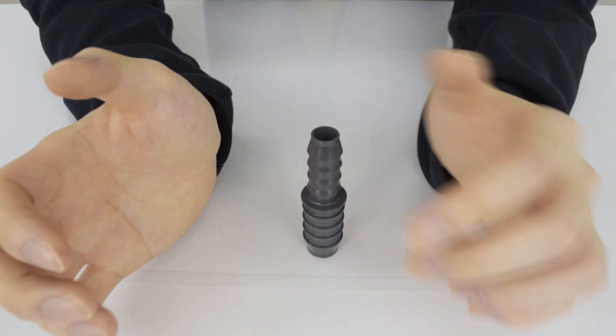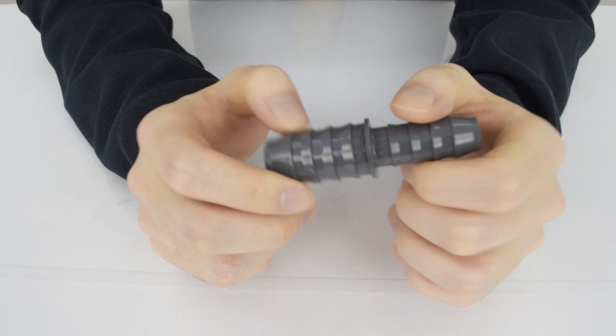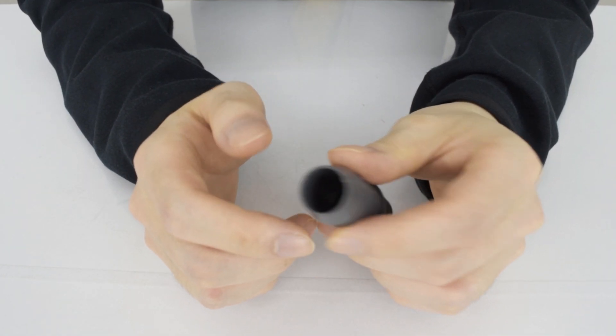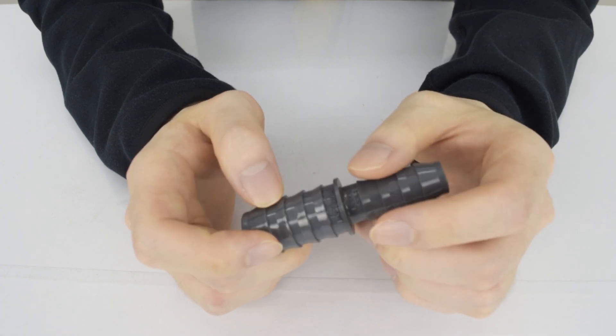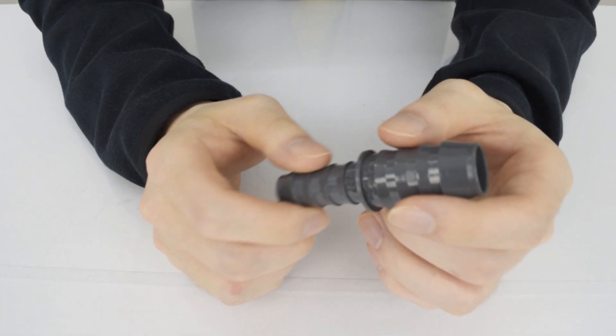Now onto our last one we have couplings. Couplings are one of the most simple types of PVC fittings. They are a small part that connects or couples one part to another. They can connect pipe to pipe and pipe to fitting. Couplings are available with slip or female threaded ends, depending on what you need them for.